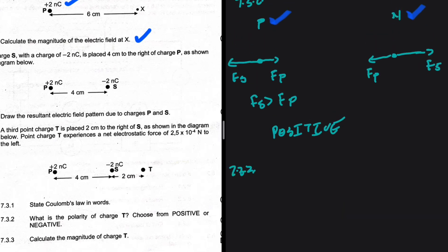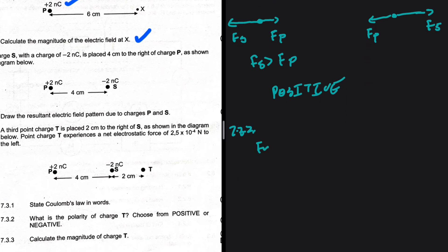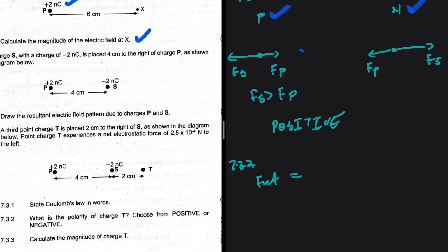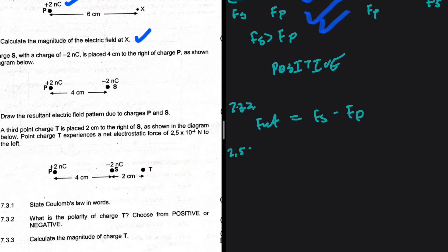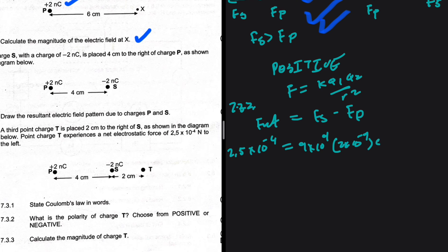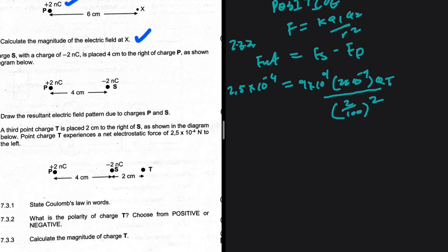For 7.3.3, we calculate the magnitude of charge T. F_net equals Fs minus Fp, taking leftward as positive. F_net is 2.5 times 10 to the minus 4. Fs equals k times q_S times q_T over r squared: that is 9 times 10 to the 9, times 2 times 10 to the minus 9, times q_T, divided by (2 over 100) squared — converting 2 centimeters to meters.